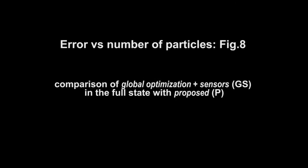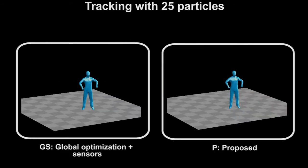In this experiment, the performance of the proposed approach is evaluated when sampling is done using as little as 25 particles. On the left, results are presented using global optimization in the full state, including orientation information on the weighting function.